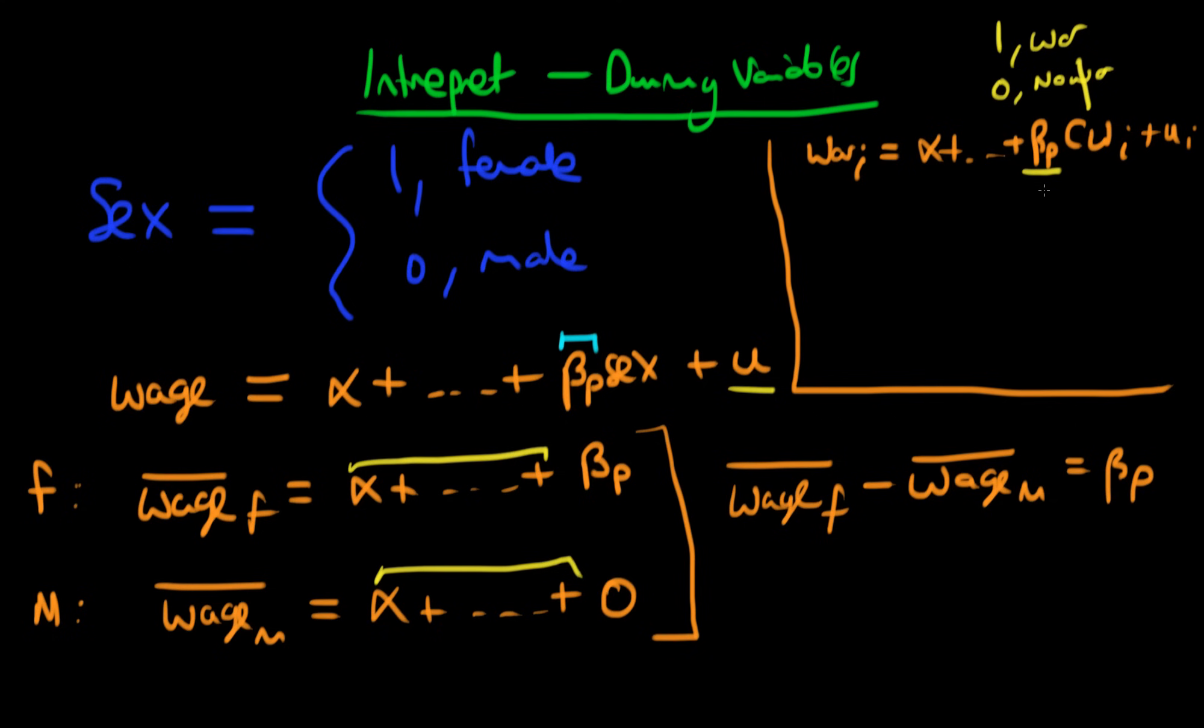So this β_p, again, represents a premium in terms of the number of wars which a country would likely experience in the next 10 years based on whether they had a war in the last 10 years.